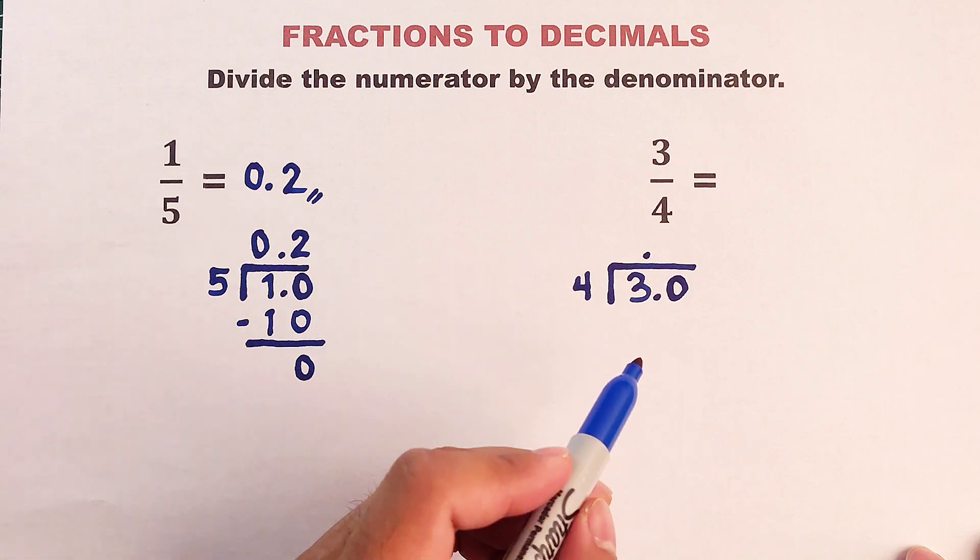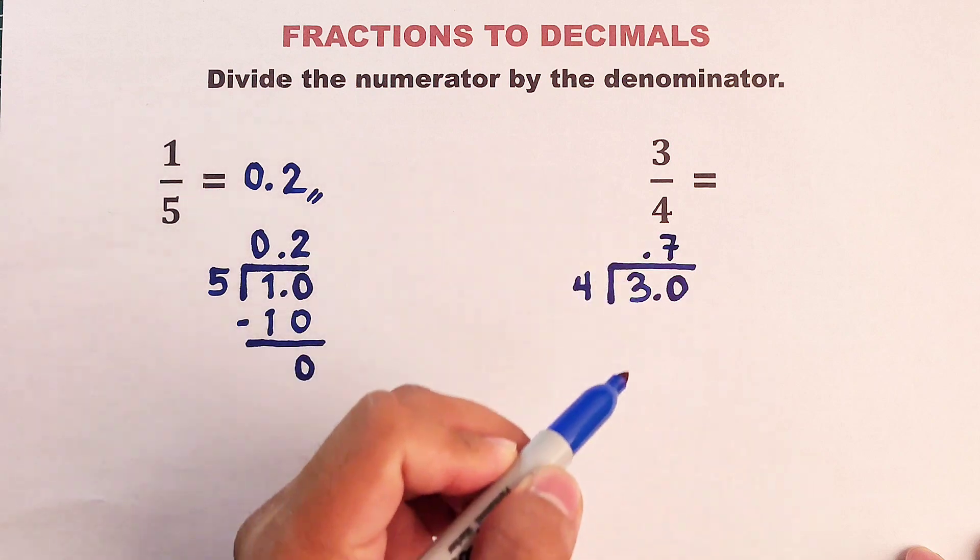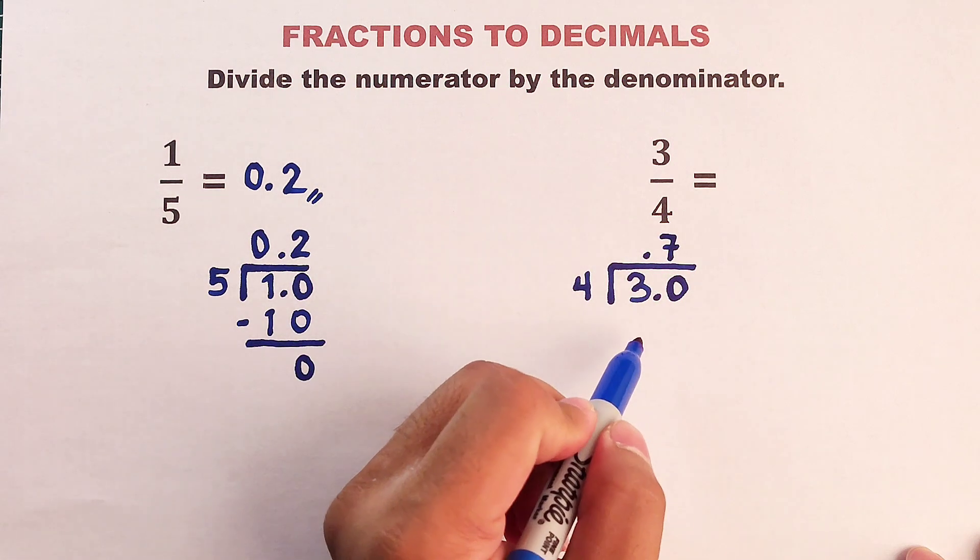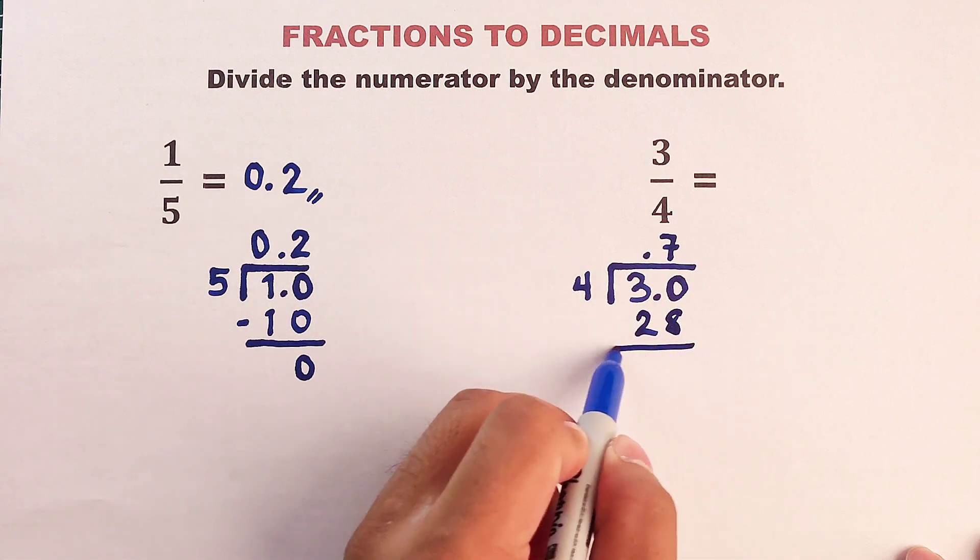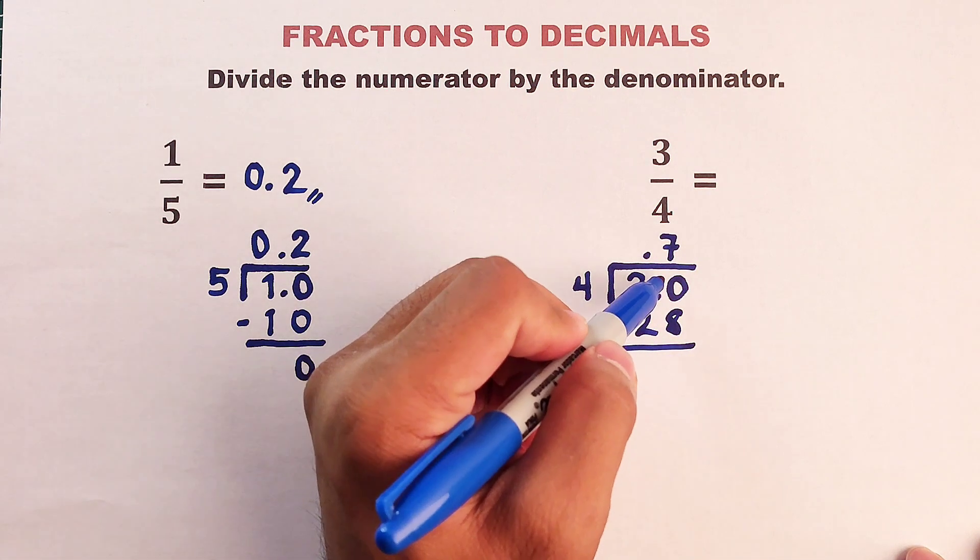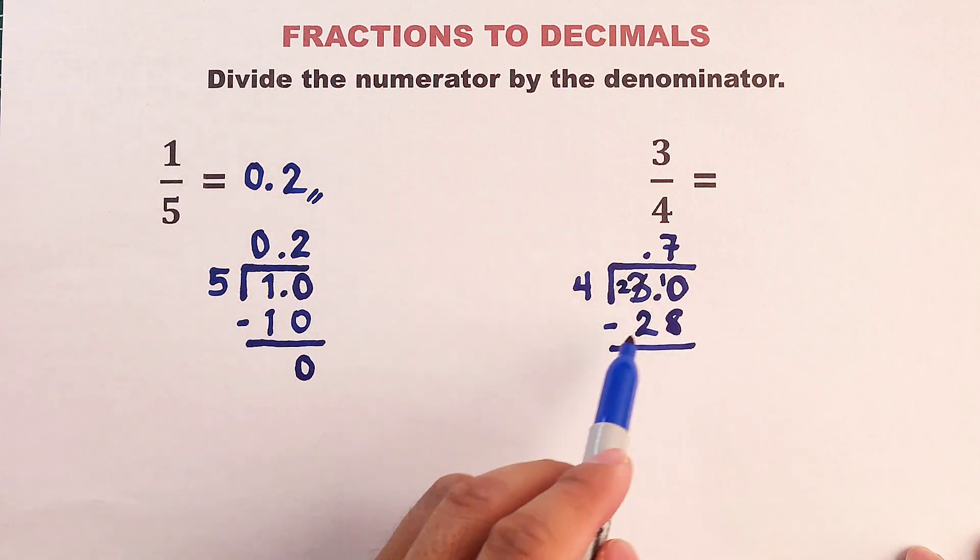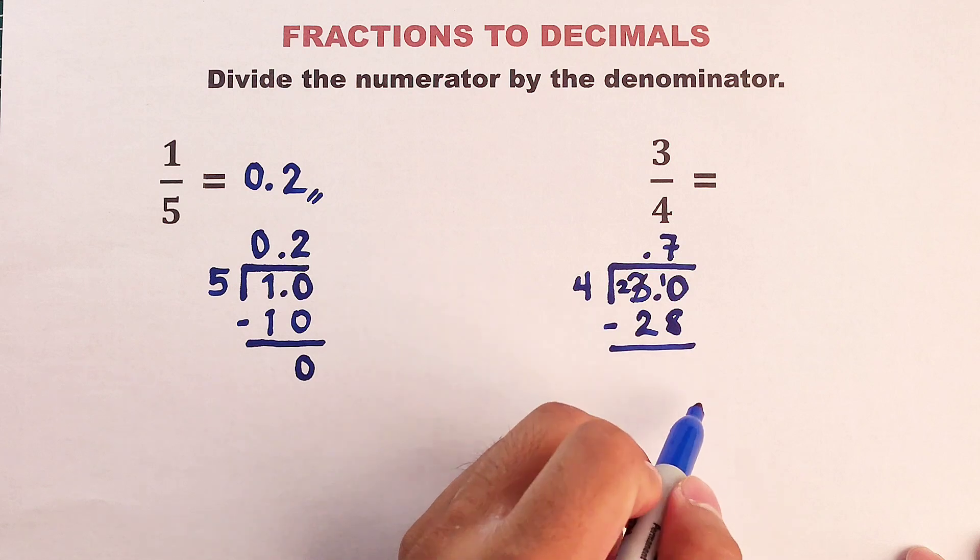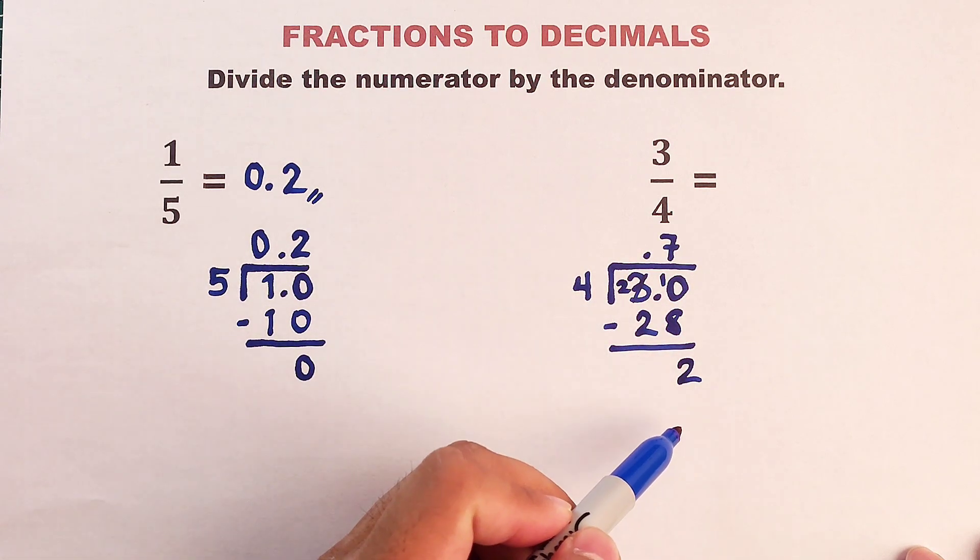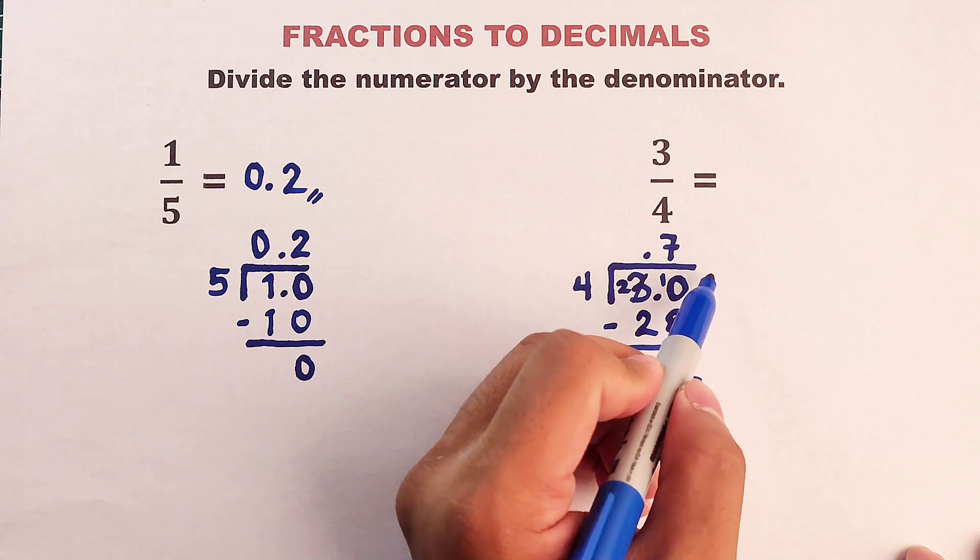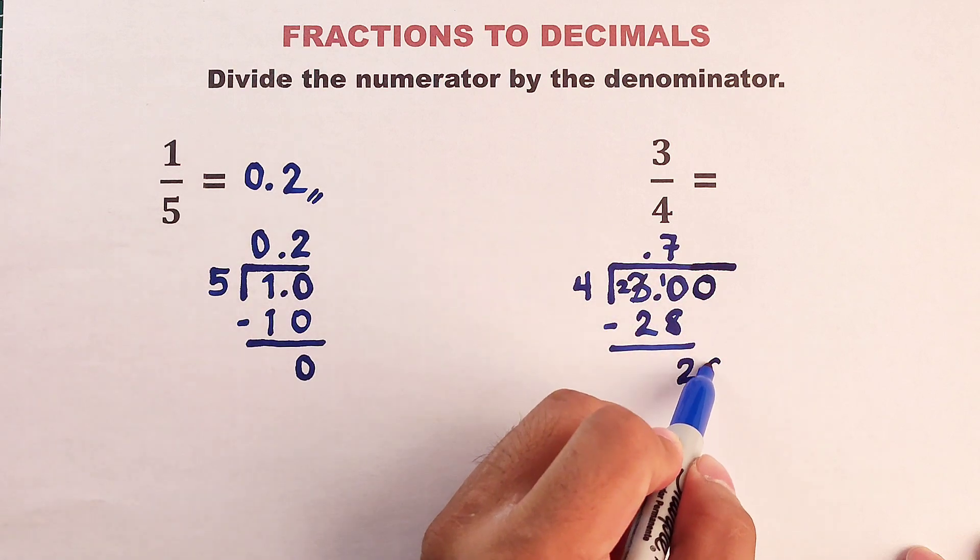Okay, very good. We have 7 fours. So we have here 7. Then we will multiply 7 times 4. That would be equal to 28. And for this, we will subtract it. So we will borrow 1 from here. This is 2. This will become 10. 10 minus 8, that would be equal to 2. And then 2 minus 2 is 0.